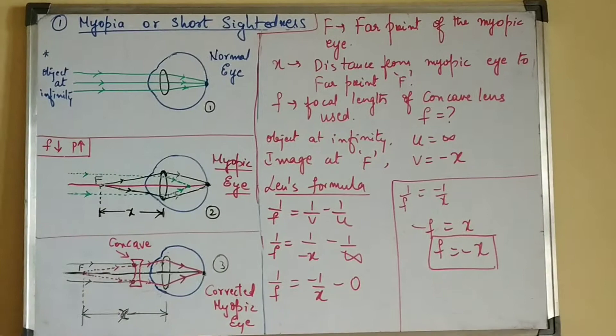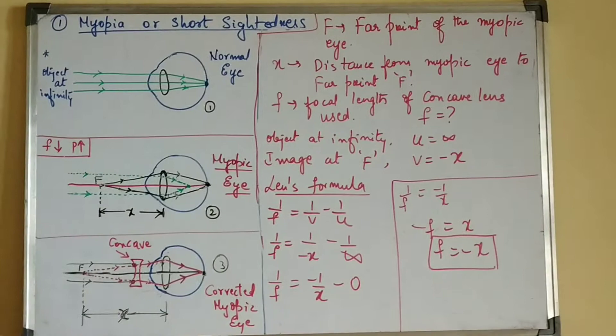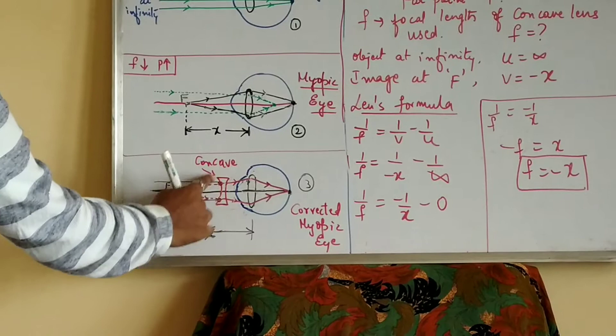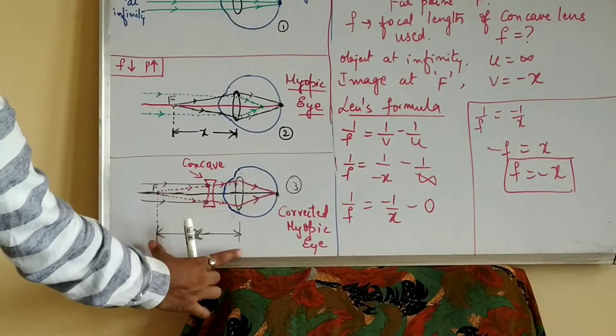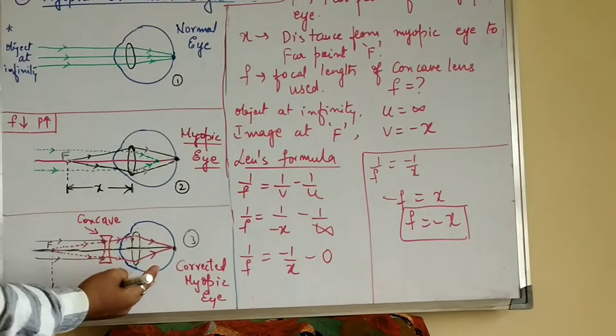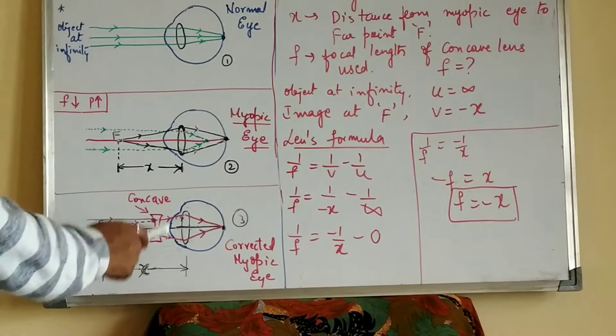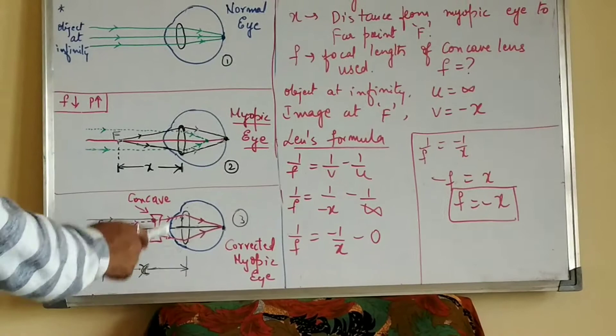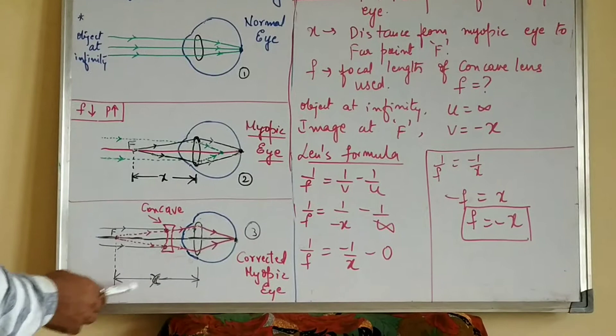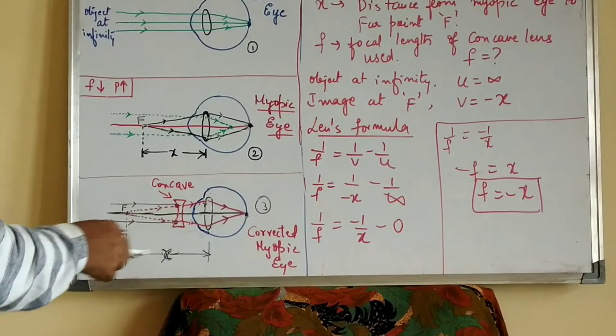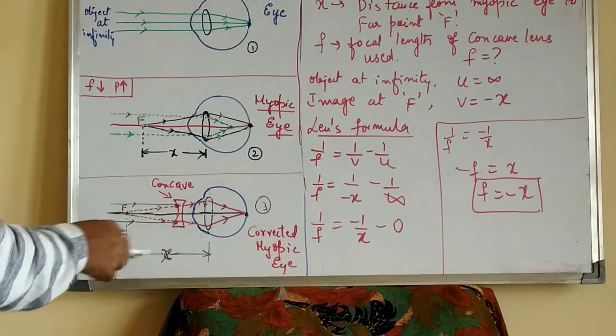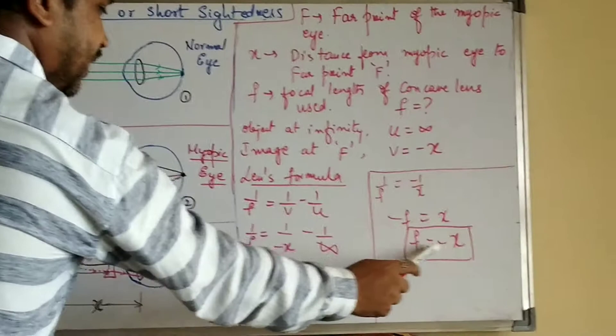Cross-multiplying: f = −x. The focal length of the concave lens used for correction is equal to negative x — meaning the focal length of the concave lens equals the distance from the myopic eye to the far point. The negative sign indicates measurement towards the left. So f = −x is the result.